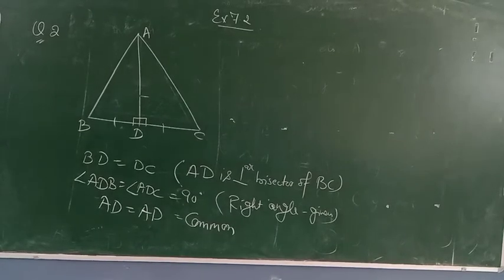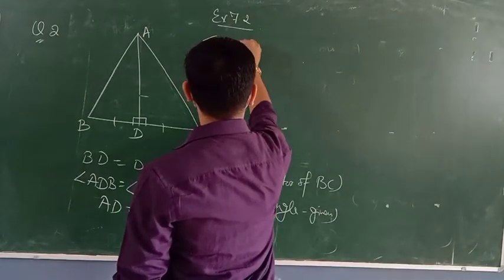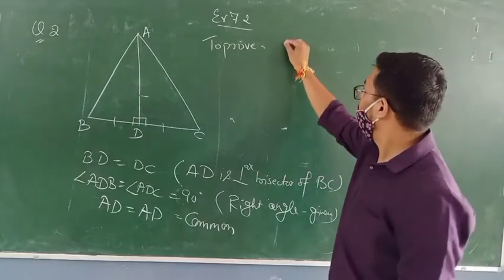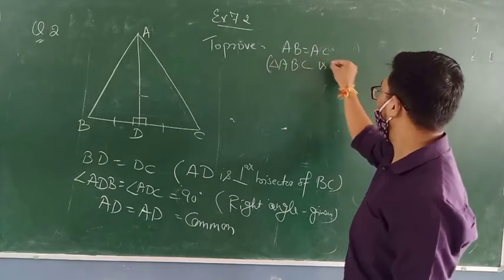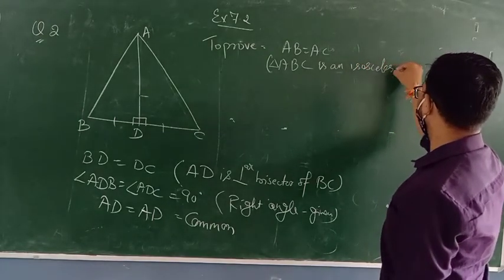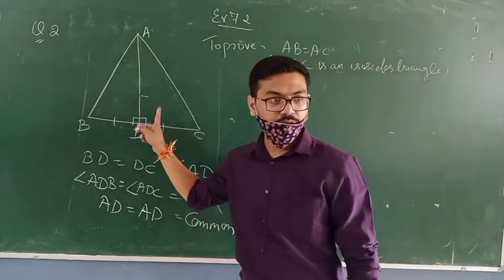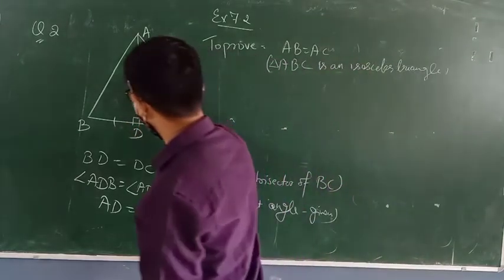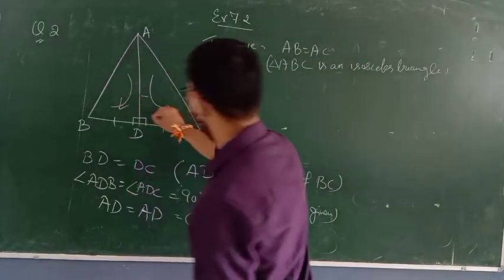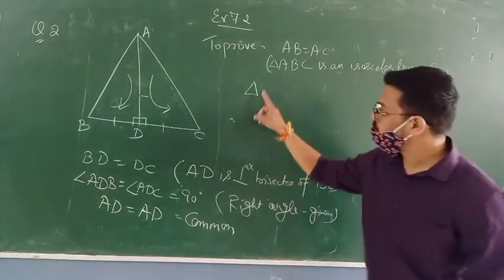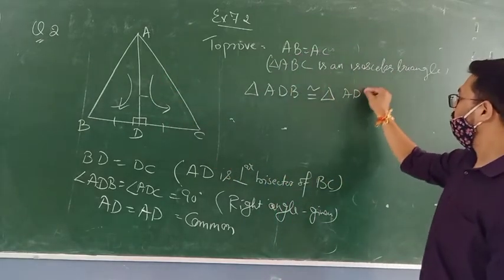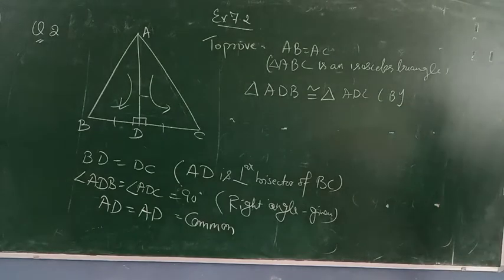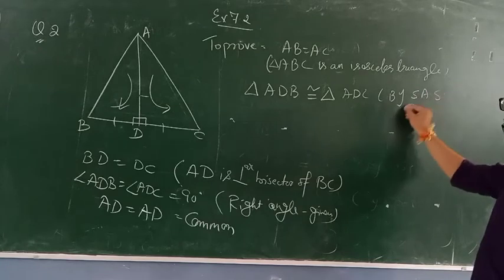So BD equals DC, angle ADB equals angle ADC equals 90 degrees, and AD equals AD — that is common. So now I can say that these two triangles are congruent by side angle side. To prove: triangle ABC is an isosceles triangle, meaning AB equals AC. If these two triangles are congruent by side angle side congruency rule, then triangle ADB is congruent to triangle ADC.